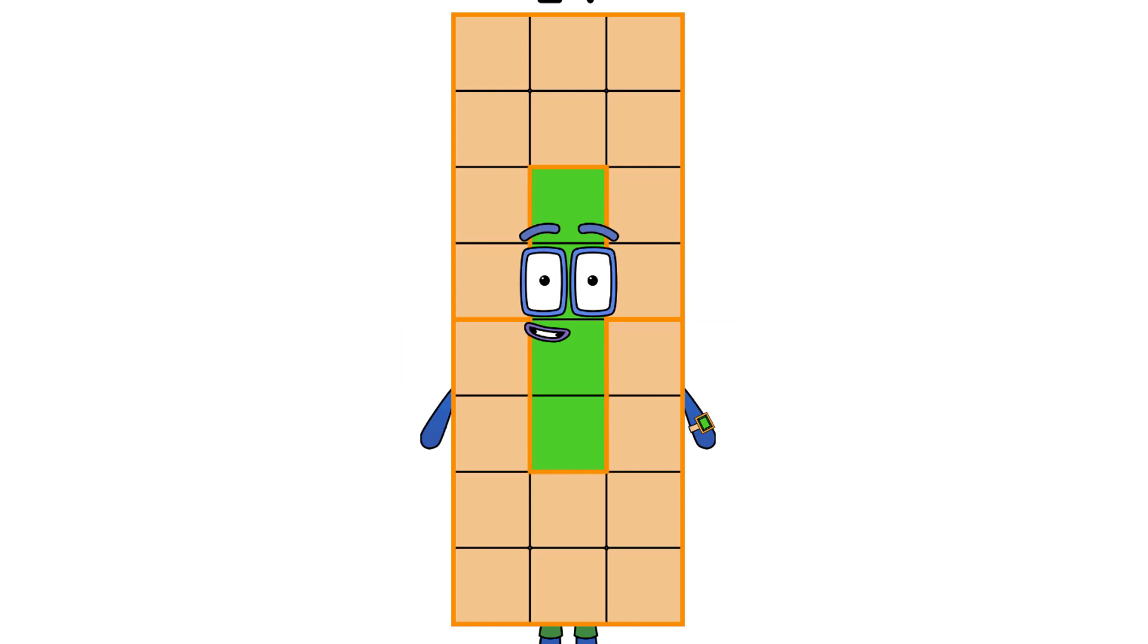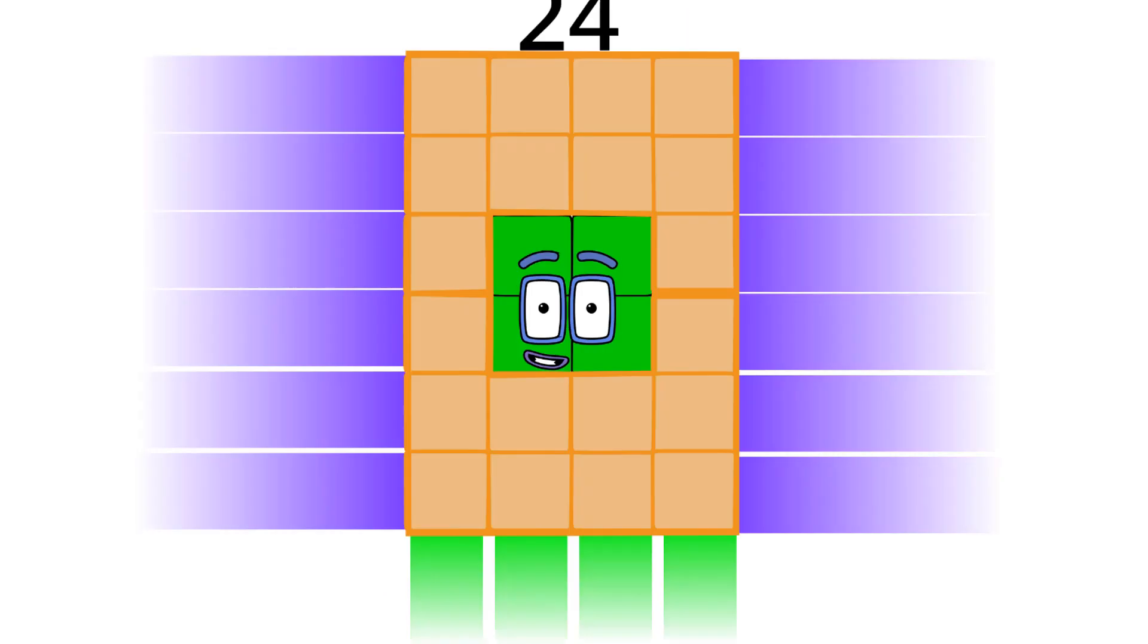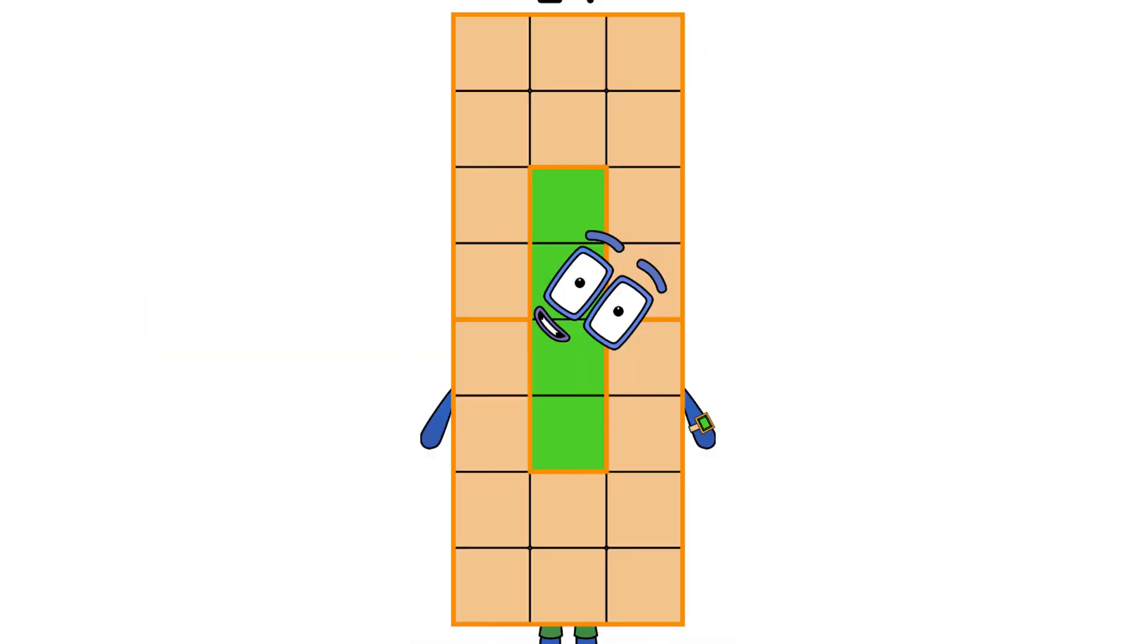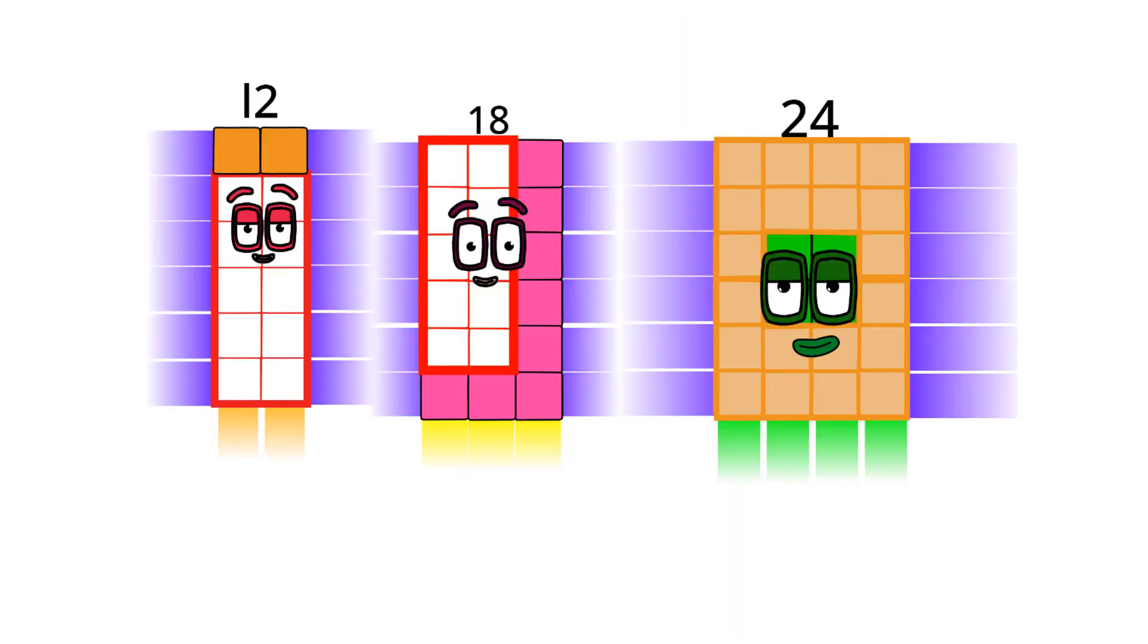Which means I am a super rectangle. I like to go fast like 18, because I am faster. If you want to learn more about super rectangles like me, here it is. 12 is 2 times 6, 18 is 3 times 6, and I am also 4 times 6.